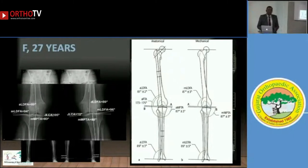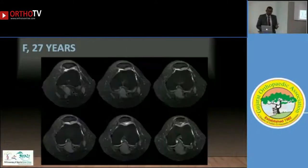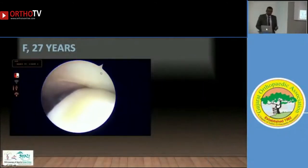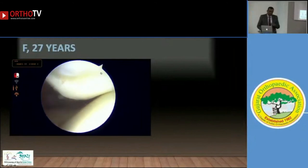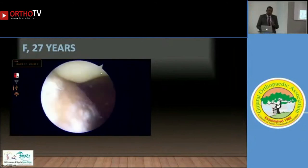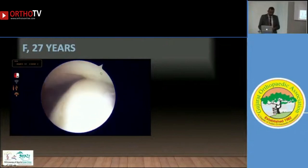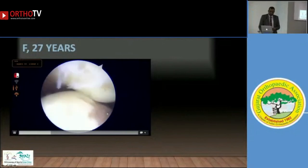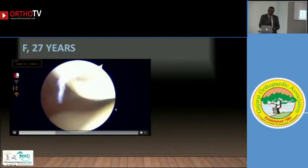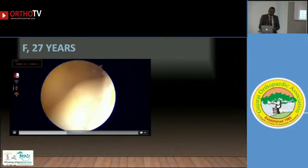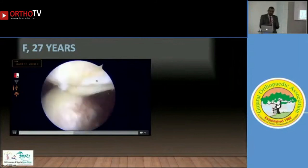I decided to go in and do surgery. First, I did arthroscopy to see what was happening. I could see that the trochlea was actually relatively normal — shallow, but not too bad. On the lateral gutter I could see a cartilage lesion where the patella was rubbing. There was also a big cartilage defect on the medial patellar facet. Overall, the trochlea did not look bad to me; the patella was moving out from the lateral condyle and rubbing on the lateral gutter.